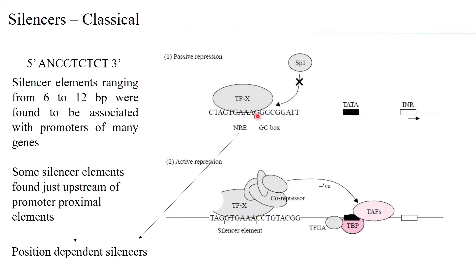Active repression occurs when the silencer element binds to a core repressor, and that core repressor binds directly to the transcription machinery. Because it binds to the transcription machinery, it prevents proper positioning or activation of factors, thereby preventing initiation of transcription. When the silencer is directly involved with the transcription machinery itself, this is called active repression.